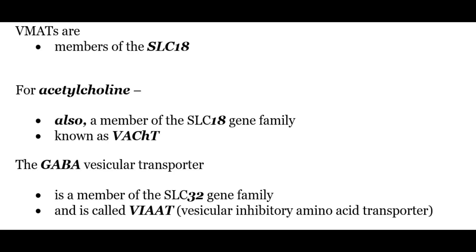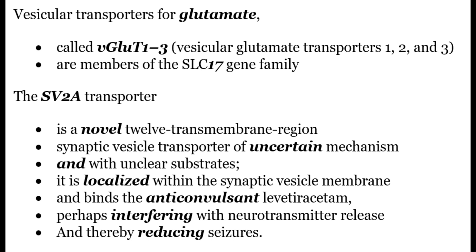Vesicular transporters: subtypes and functions. The VMATs are members of the SLC18 gene family. The vesicular transporter for acetylcholine also belongs to this family and is known as VAChT. The GABA vesicular transporter is a member of the SLC32 gene family. The vesicular transporter for glutamate, called VGLUT1, 2, and 3, is a member of the SLC17 gene family. The SV2A transporter is a novel 12-membrane region synaptic vesicular transporter of uncertain mechanism and unclear substrate. It is localized within the synaptic vesicle membrane and binds with the anticonvulsant levetiracetam, perhaps interfering with neurotransmitter release and thereby reducing seizures.